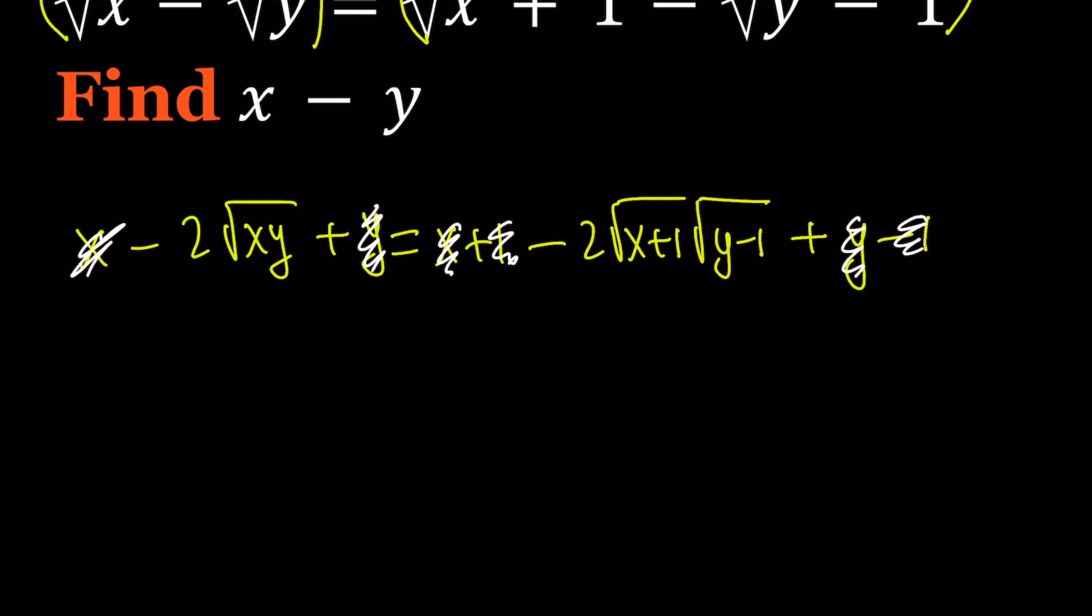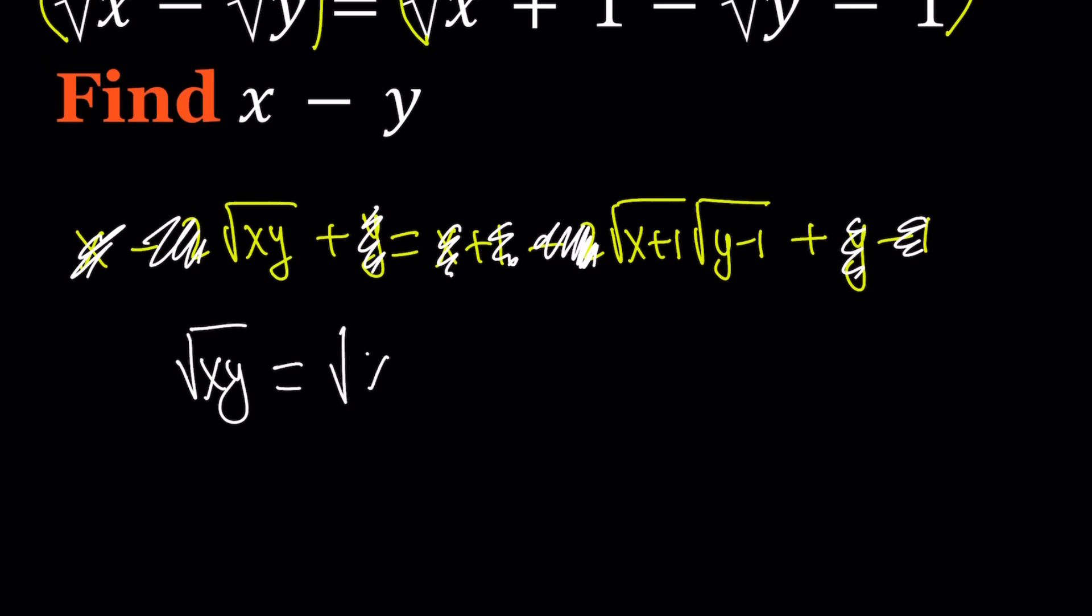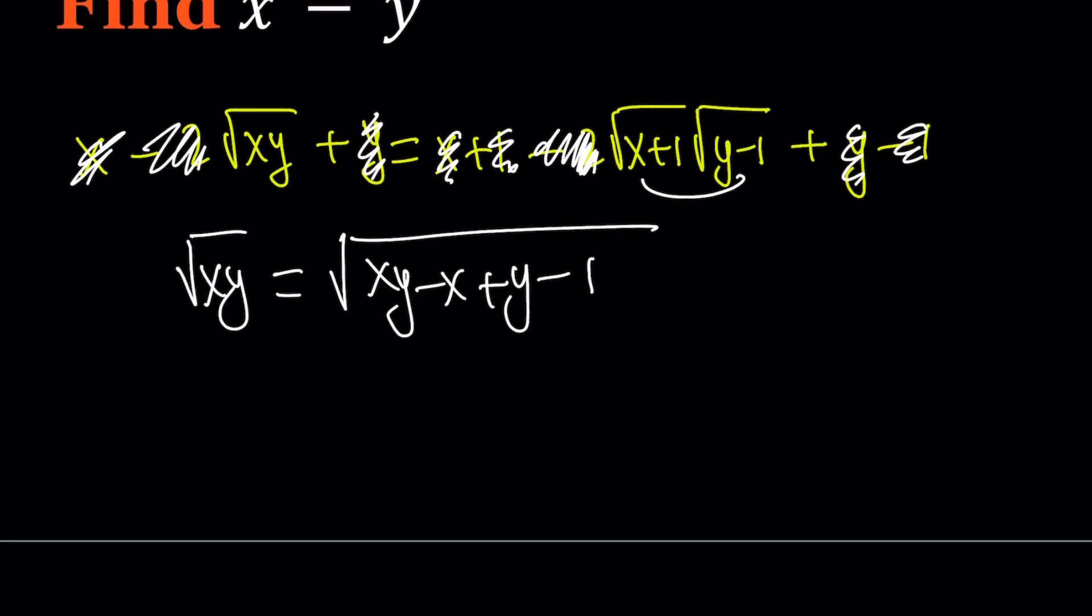leaving us with negative 2 times something equals negative 2 times something else. After doing all these simplifications, of course, negative 2s also cancel out. We couldn't do it while we were adding, but now we can do it. And now we have radicals on both sides, so let's go ahead and distribute the right-hand side. I can just distribute because these two can be multiplied inside. xy minus x plus y minus 1, and you can get rid of the radicals by squaring both sides and write this as xy equals xy minus x plus y minus 1. Awesome.